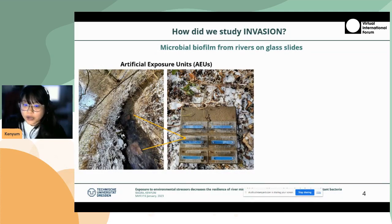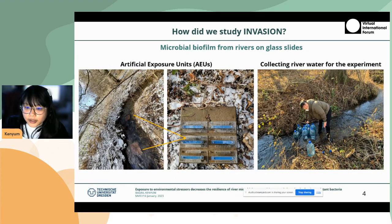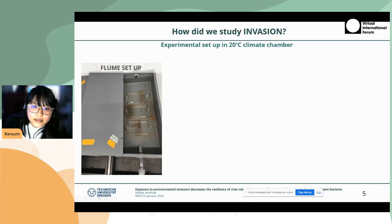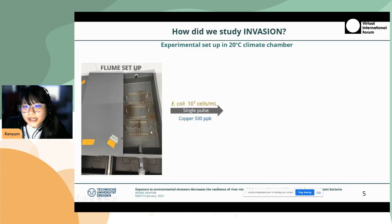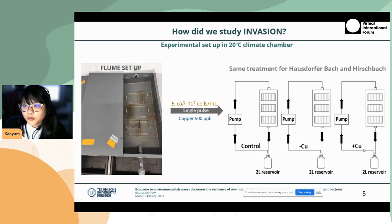To study the invasion dynamics, we placed glass slides fastened with a holder and submerged them in the river for one month so that the biofilm would grow. After that, we took them back and also collected river water for our flume setup. The flume setup was in a 20°C climate chamber. As you can see, this is a picture of a basic flume where we had exposure units placed. We exposed it to E. coli and copper at 500 ppb on a single pulse. We had three different treatments: one control, one flume with E. coli without copper, and another with E. coli and copper at the same time. We did this for both river microbiofilms.